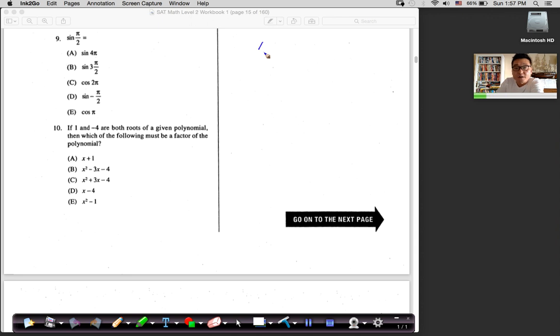Sine 90 is 1. I'm looking for 1. That gives me 1, right? Sine 4 pi. What is sine 4 pi? Same thing. Sine 2 pi, which is 0. Sine 4 pi is 0. Okay, so it is not my answer.